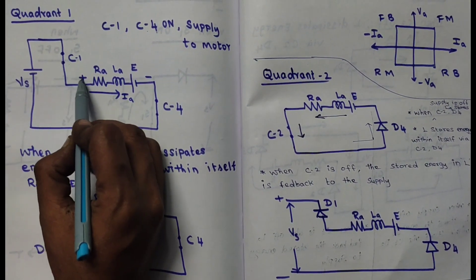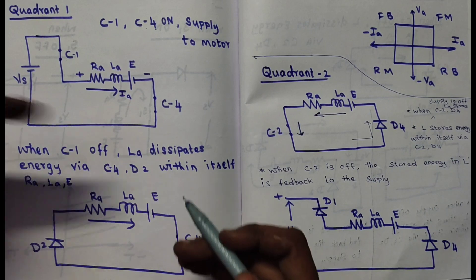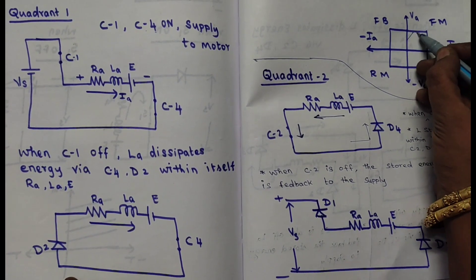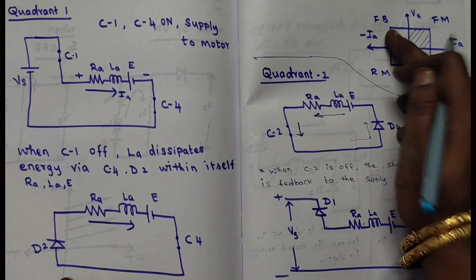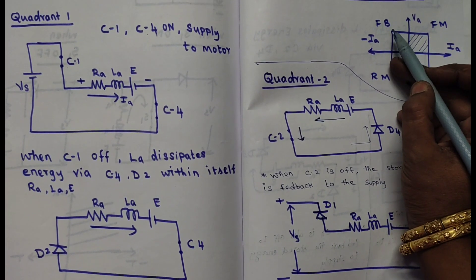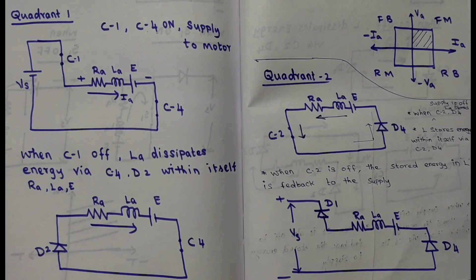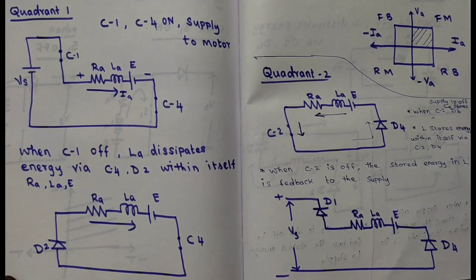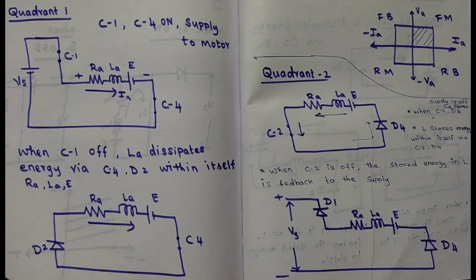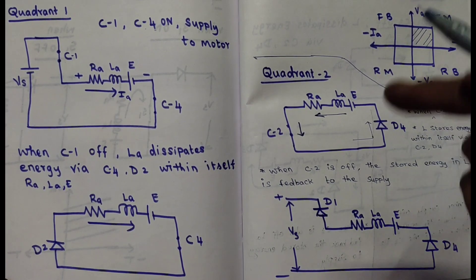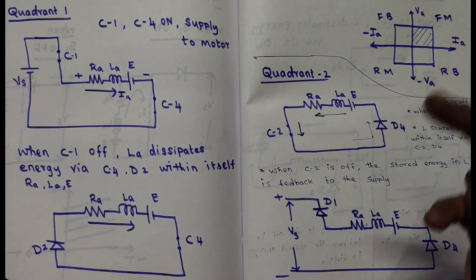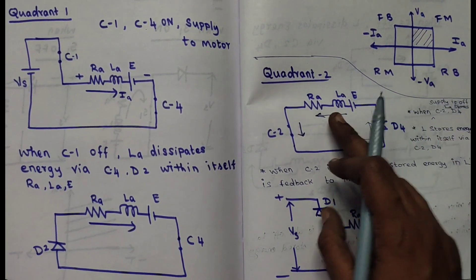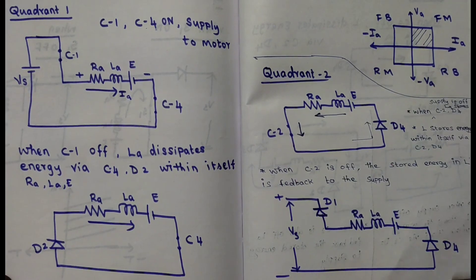In quadrant 1, both current and voltage are positive. Now for quadrant 2 — forward braking. Braking means there is no need to connect to the supply; the supply is detached. But the motor is still rotating. When you turn off the motor, it does not stop suddenly — it continues rotating for some time, operating as a generator, and that rotational movement stores energy in the inductor.